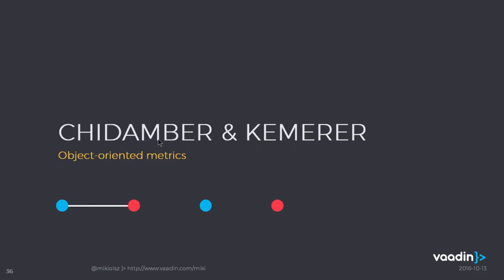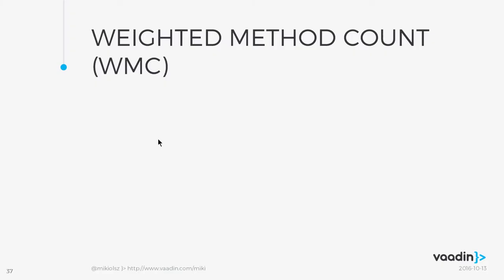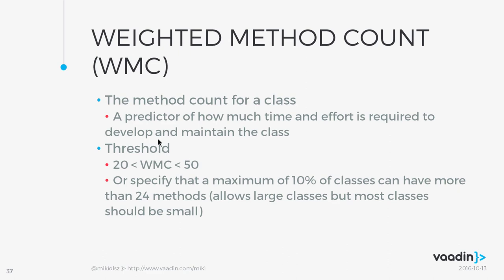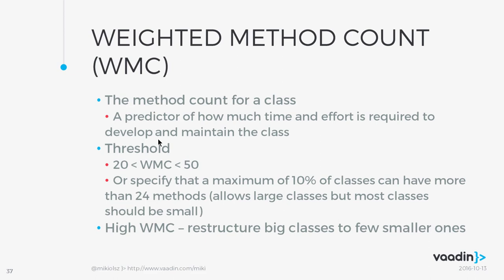The Chidamber and Kemerer object-oriented metrics consist of six metrics. The first is Weighted Method Count (WMC), which predicts how much time and effort is required to develop and maintain a class. If a class contains too many methods, it will be very hard to maintain and change. The threshold is between 20 and 50. If the value is very high, you need to restructure your class into a few smaller ones.